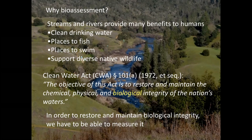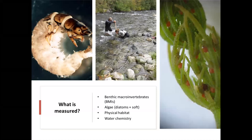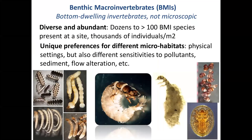The different indicators we measure at bioassessment sites are benthic macroinvertebrates, or BMIs. We also collect algae samples — both diatoms and soft algae. We measure physical habitat variables and collect water chemistry samples. Today I'm going to focus mostly on benthic macroinvertebrates, or BMIs. Benthic macroinvertebrates are organisms that live on the stream bottom, large enough to see with the naked eye, although you need a microscope to identify them to genus and species. They're diverse and abundant — from dozens to more than 100 different species at a site, with thousands of individuals per square meter. They have unique microhabitat preferences and different sensitivities to human disturbance, making them widely used as ecological indicators by monitoring programs around the world.